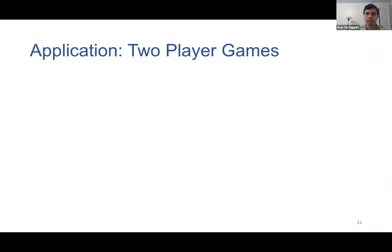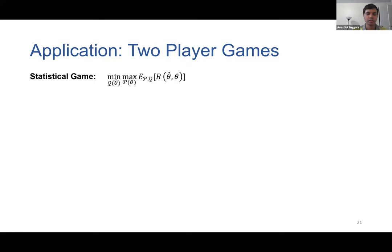The framework of online learning has several applications, ranging from recommender systems to online ad placement to solving two-player and multiplayer games. Here I'll present its application to solving two-player games. We consider the linearized statistical game presented a few slides ago. A standard approach for solving such games is to let both the min and the max players play a repeated game against each other, and rely on online learning algorithms to choose their actions.